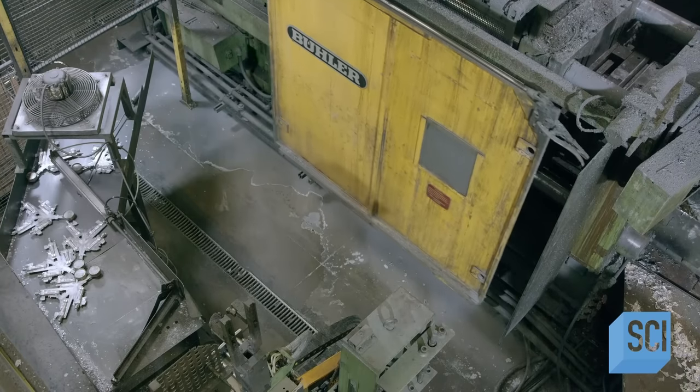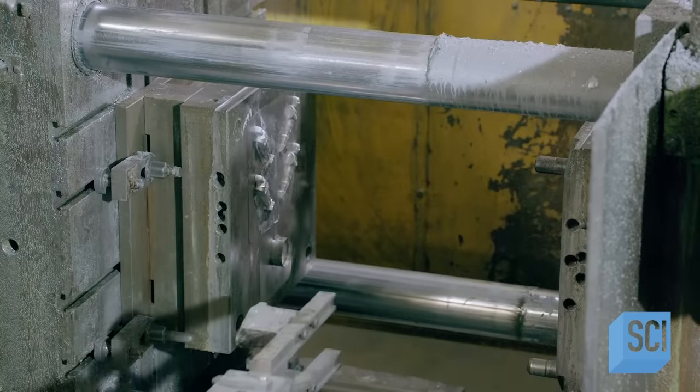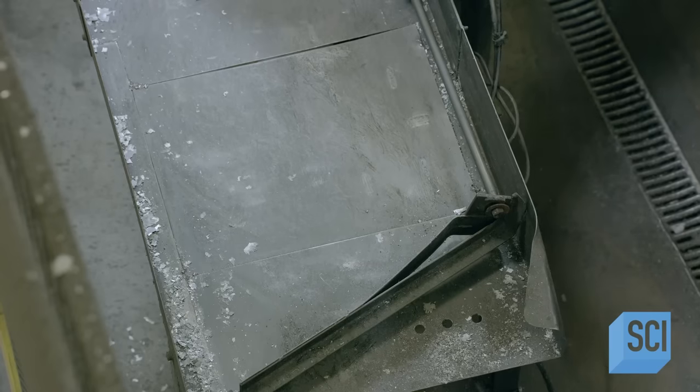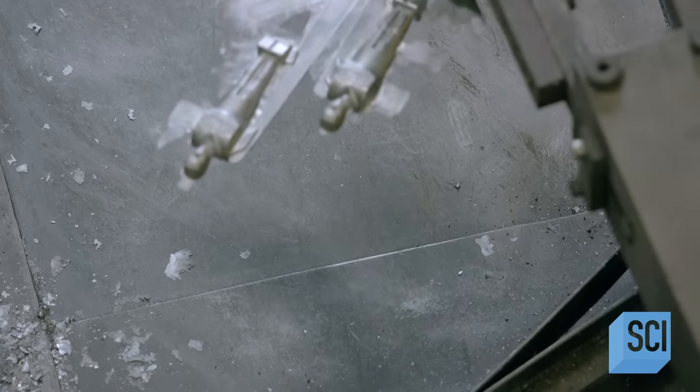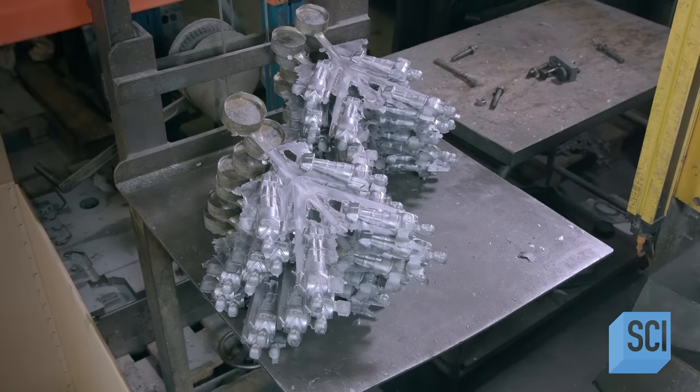An injection molding machine shoots the molten aluminum into molds in the shape of players. A robot removes the casting from the injection machine. The mold yields four players, each one sporting the manufacturer's name on the front of his jersey.